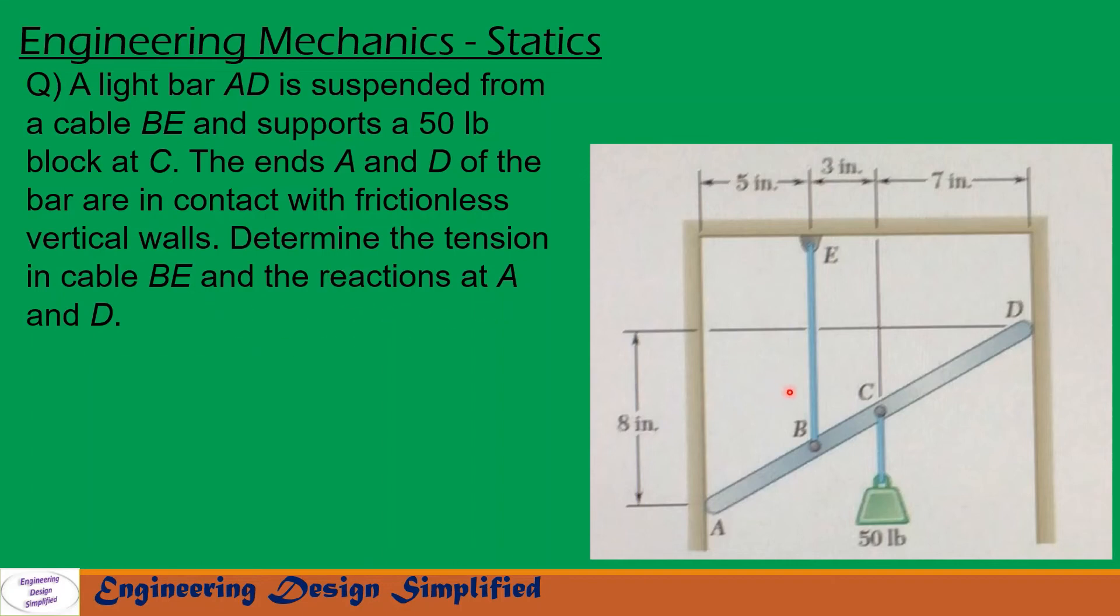In this problem, a weightless bar AD is arranged like this. These two walls are frictionless, and at point C there is a weight of 50 lb hanging downwards, and at point B there is a cable BE arranged like this. Various dimensions are shown. We need to find tension in this cable and the reactions at D and A. Let us see in the coming slides how to solve this problem.